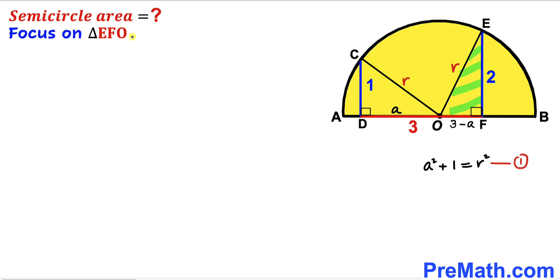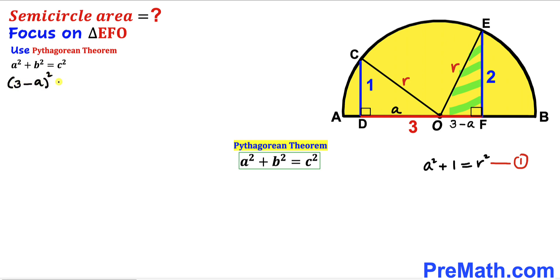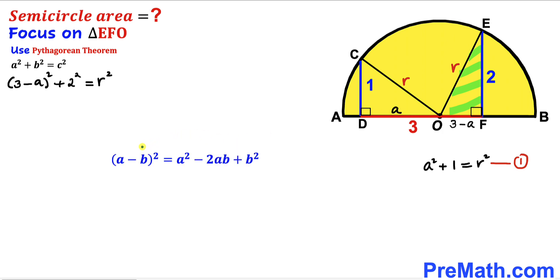Now we focus on the other right triangle EFO and apply the Pythagorean theorem as well. The hypotenuse is r, and the two legs are (3 − a) and two. Filling in the Pythagorean formula gives us (3 − a)² + 2² = r².